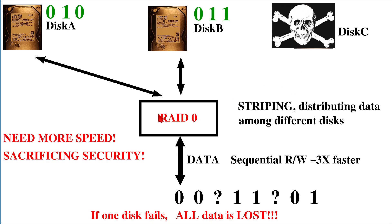This is why RAID 0 is most often used in applications where data security is not mission critical. For example, you can keep a backup of your original video source files, and when you're working on editing them you need the fastest possible access. Even if your RAID 0 array fails once a year, you don't care because you can simply restore the data from an existing backup. You accept that RAID 0 is dangerous, replace the failed disk, and recover from your backup.